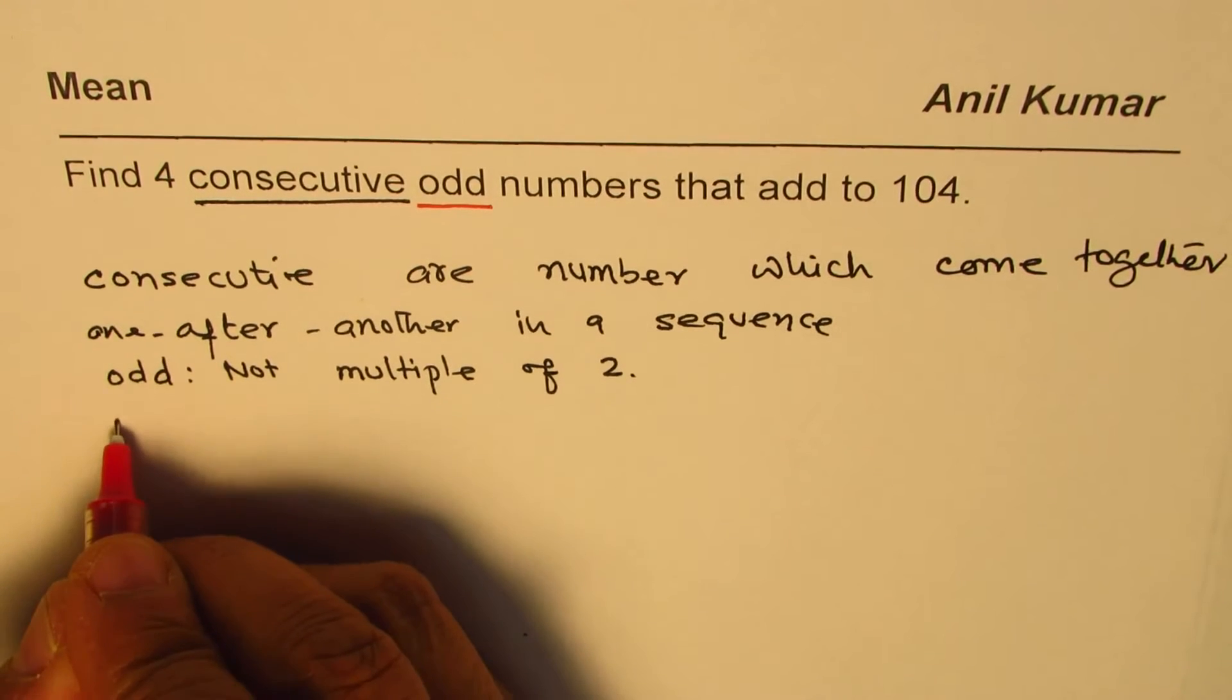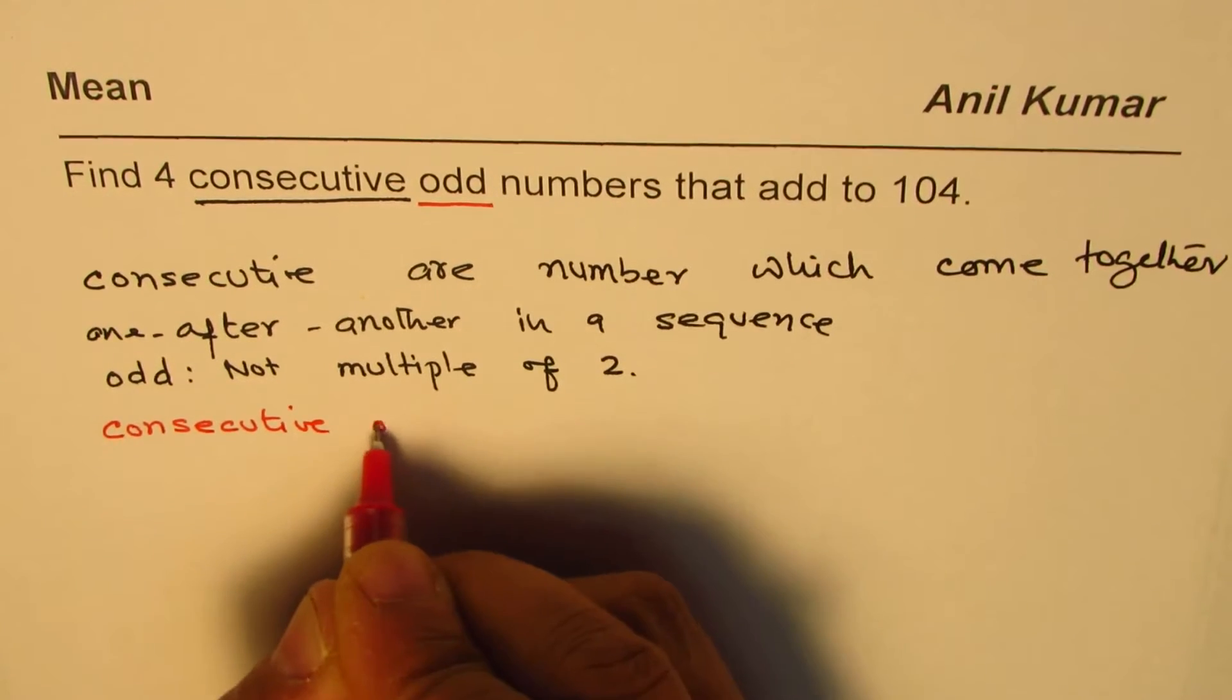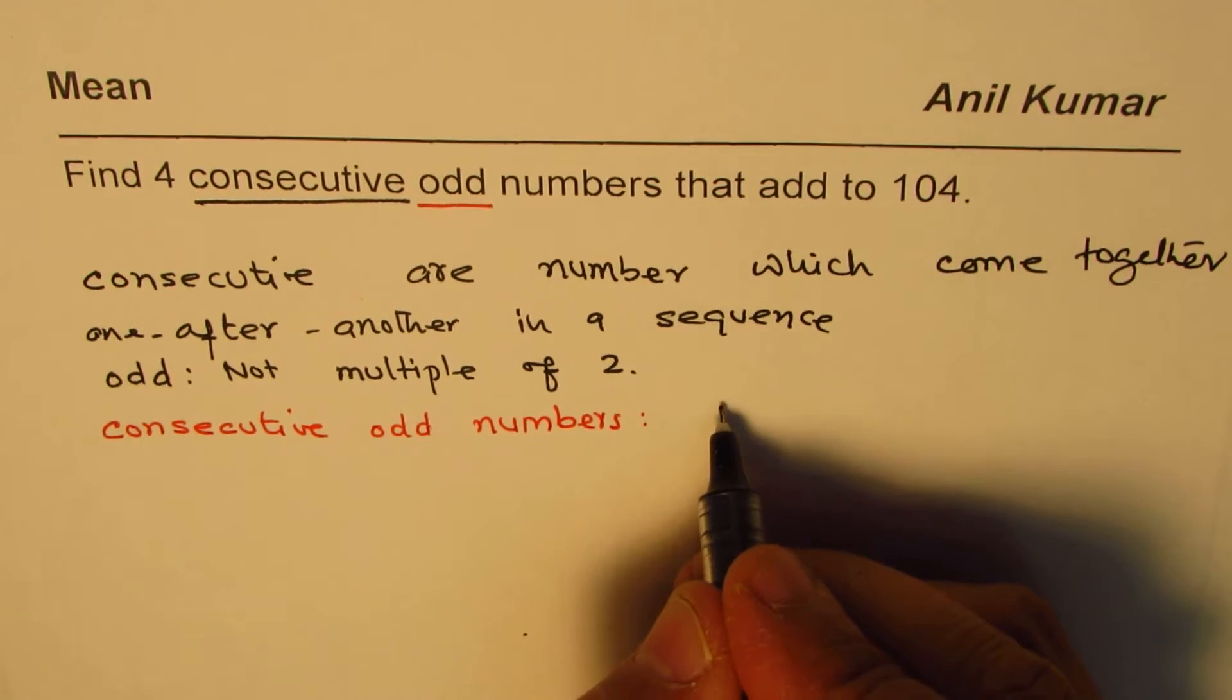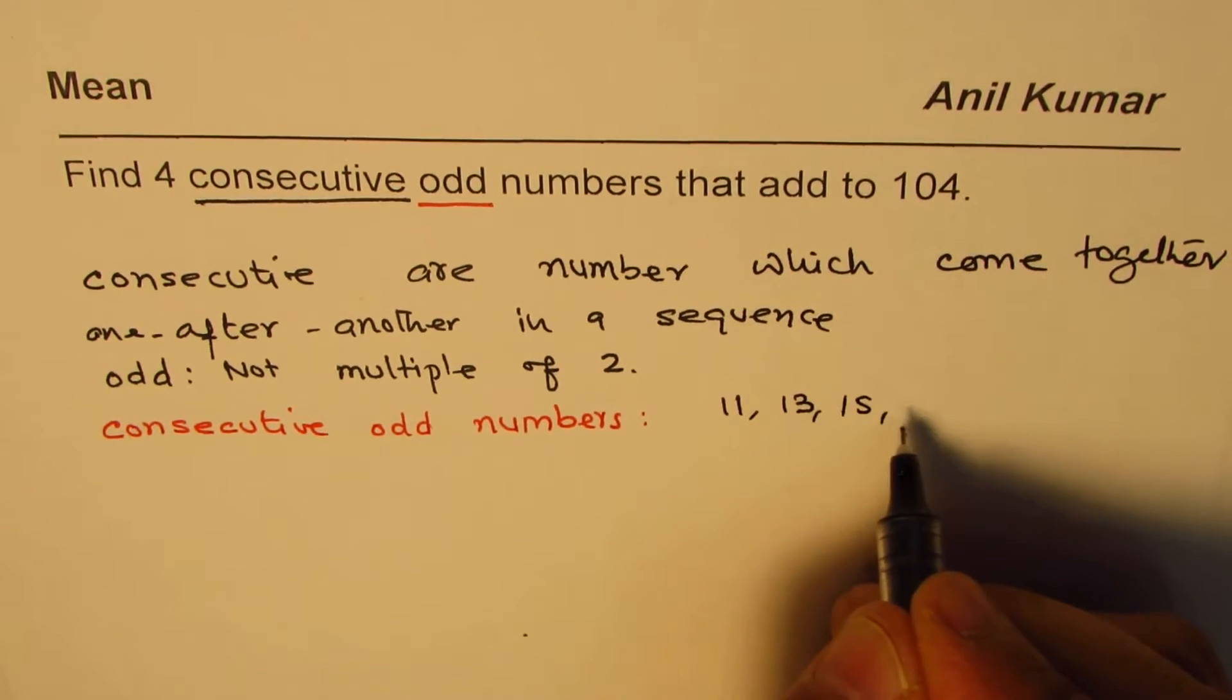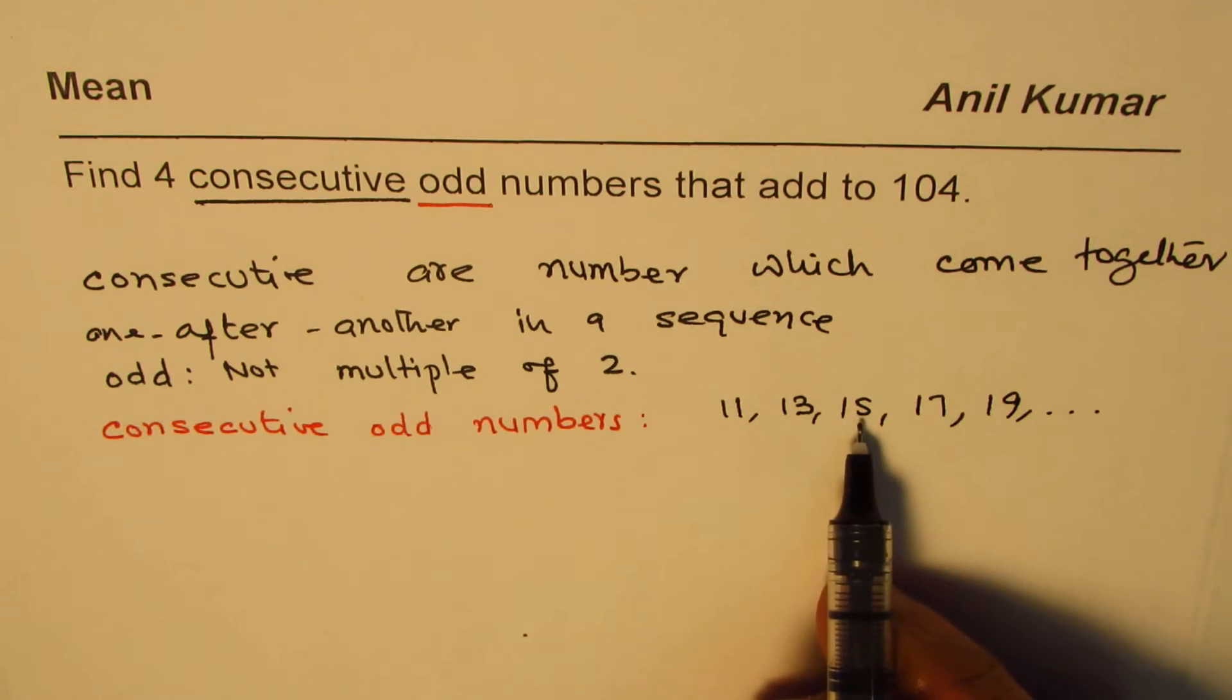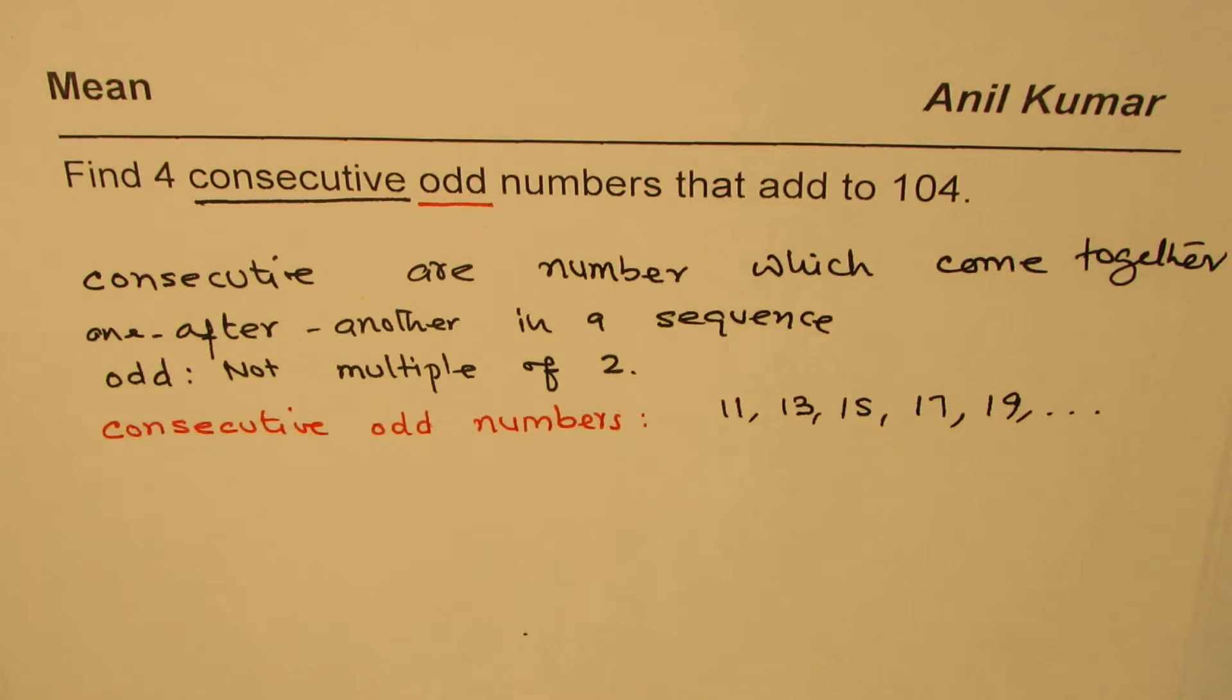So we are looking for consecutive odd numbers. Let's understand. We are looking for consecutive odd numbers. That means numbers like - let me write down a few - like 11, then skip 12, 13, skip 14, 15, skip 16, 17, skip 18, 19, and so on. Such numbers are consecutive odd numbers. They are odd and they come one after the other in a sequence, in order of increasing or decreasing.